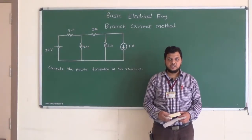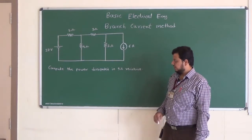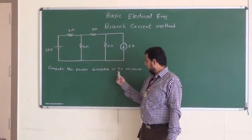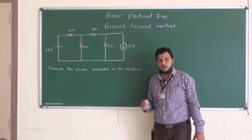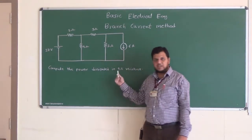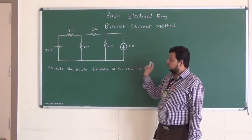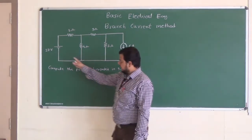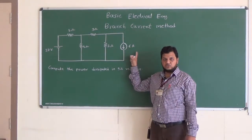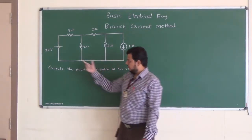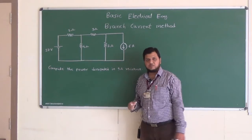Hello everybody. In this video session we will solve the next type of problem using the branch current method. This is the given circuit and we have to calculate the power dissipated in the 9 ohm resistance. Up till now we have calculated unknown currents and resistances; here we calculate power dissipated. This circuit has one more difference: there are two types of sources — a DC voltage source and a DC current source.